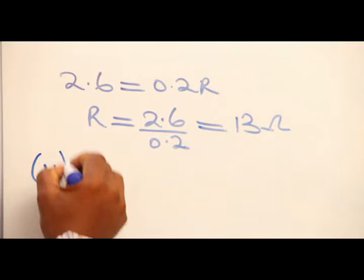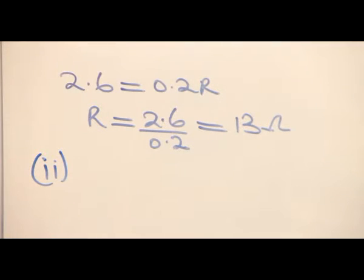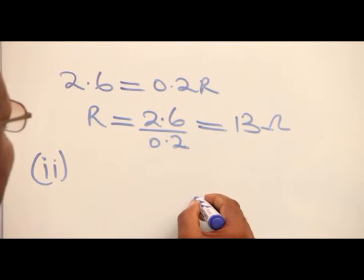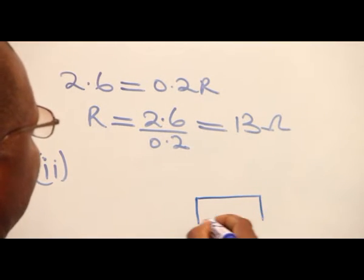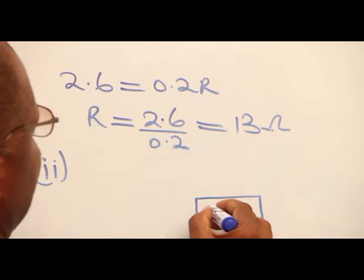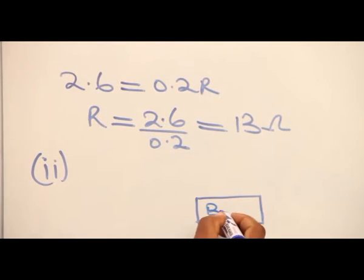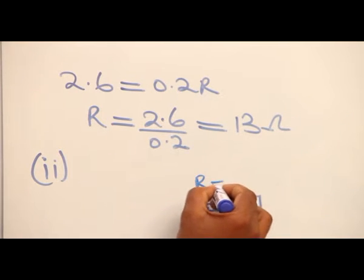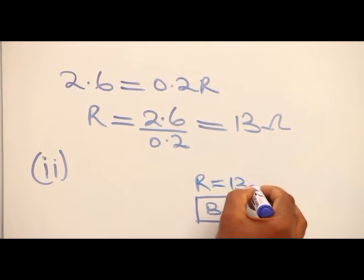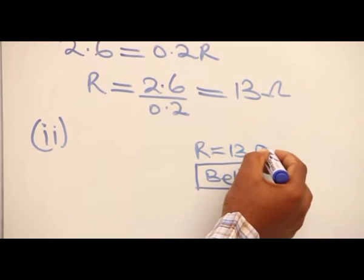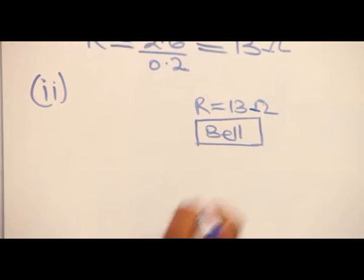The second part of the question, we are asked to calculate the current that the bell will take when the cells are in parallel. So we still have our bell, but we have one important information about the bell this time around. The information is the resistance of the bell is now known.